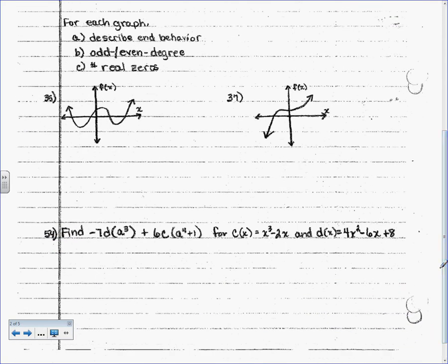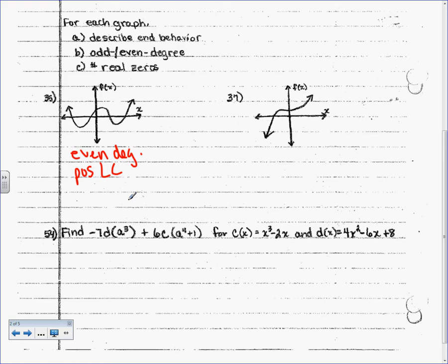So we're on 35 right now. I want you to describe the end behavior, say if it's odd or even, and say the number of real zeros. First I say: is this going to be odd or even? This is going to be an even degree — why? Because they both go the same direction. If both ends go the same direction — they both go up here — it's even. If they went opposite, it would be odd. Is it a positive or negative LC? Positive LC — because they went up. How many times does it cross the x-axis? Four. So four real zeros.